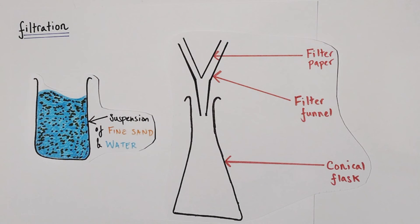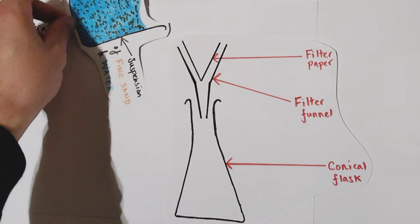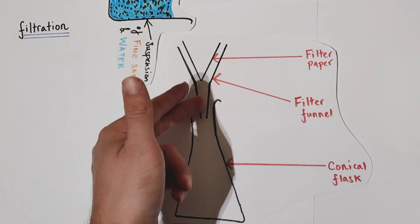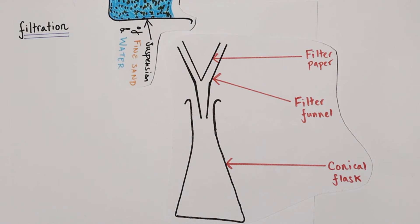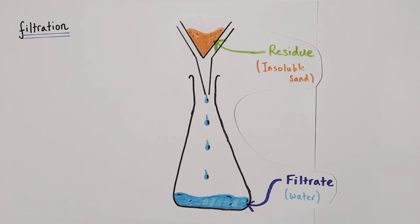Now if we left this beaker for a while, yes those solid particles would probably settle to the bottom but you'd still be able to see that there was definitely a solid present. So what we do is we grab our beaker and we pour our mixture straight through our filter paper and what we'd find is this would be our result.